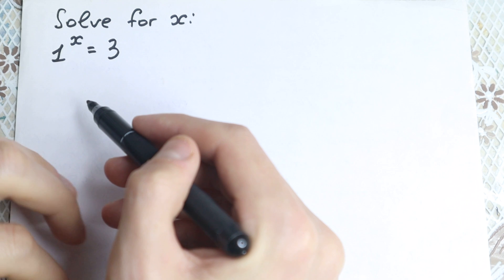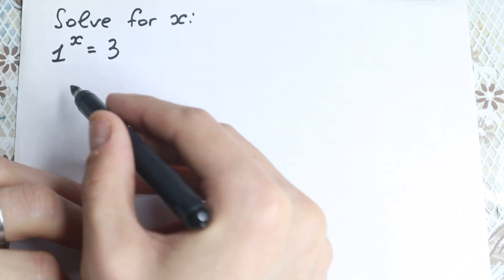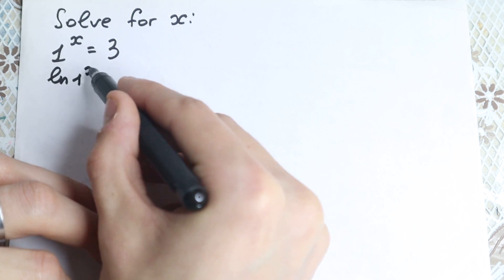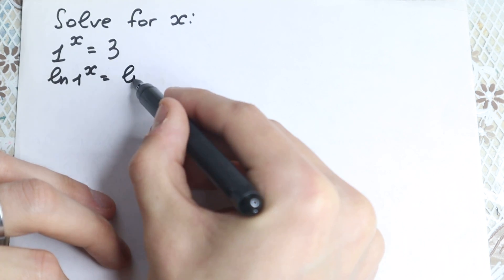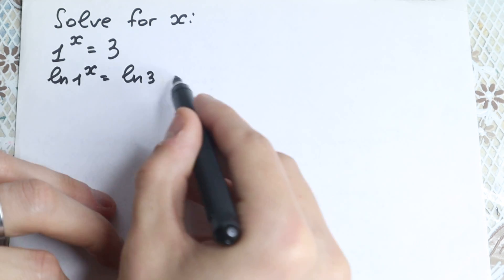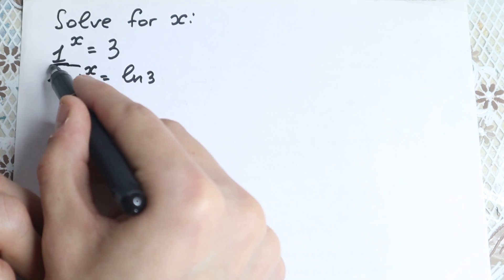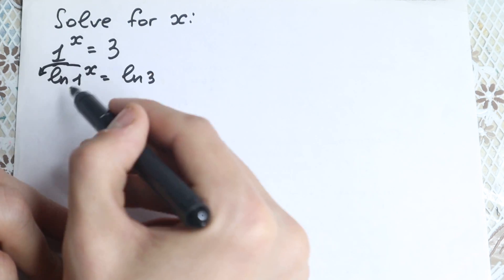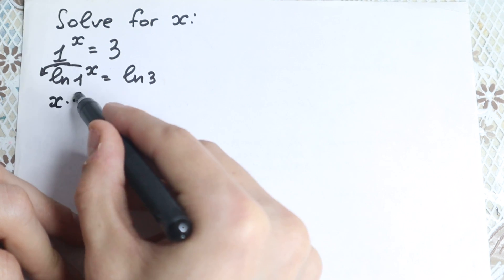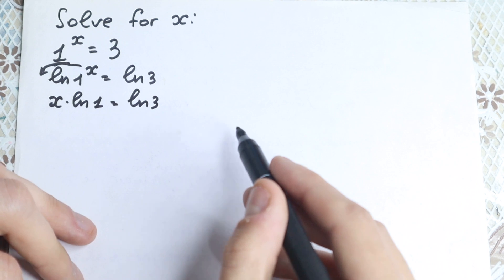This is a very tricky question. First of all, let's take the natural log on both sides. So natural log of 1 to the power x on the left equals natural log 3 on the right. We apply log on both sides, then bring the x down using the main log property: x times natural log 1 equals natural log 3.